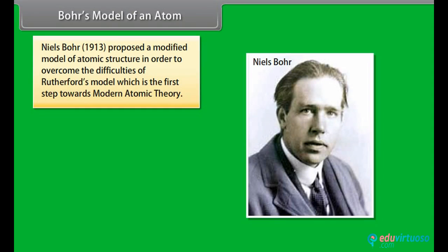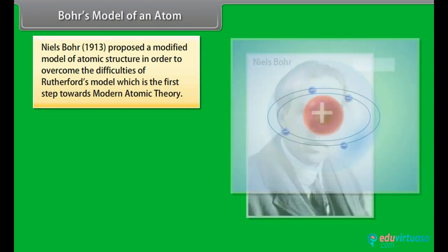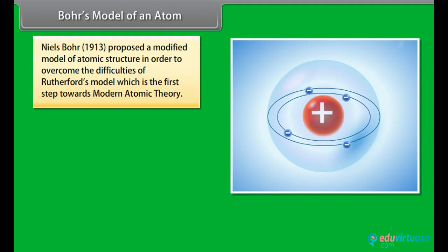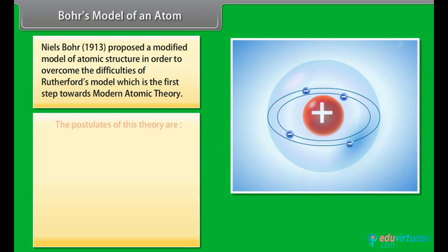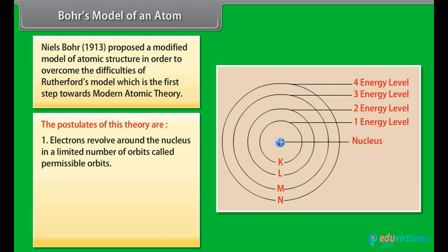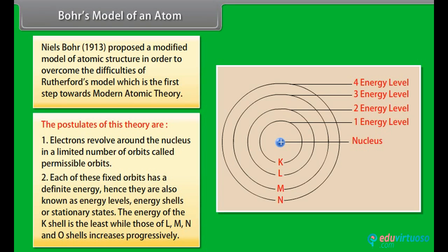Bohr's model of an atom. Niels Bohr, 1913, proposed a modified model of atomic structure in order to overcome the difficulties of Rutherford's model which is the first step towards modern atomic theory. The postulates of this theory are: electrons revolve around the nucleus in a limited number of orbits called permissible orbits. Each of these fixed orbits has a definite energy, hence they are also known as energy levels, energy shells or stationary states. The energy of the K shell is the least, while those of L, M, N and O shells increases progressively.